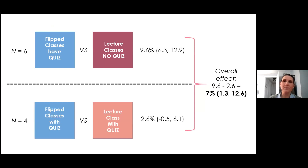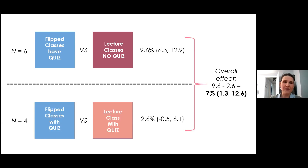Among these six studies, the flipped classes with a weekly quiz had final exam scores that were 9.6% higher than the lecture class that did not have a weekly quiz, and this difference was significant.